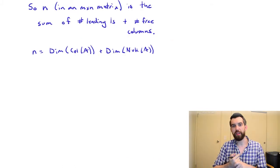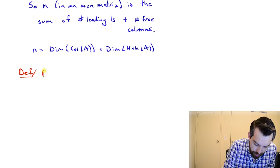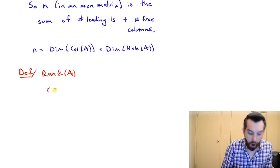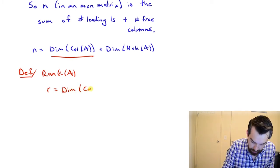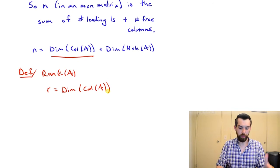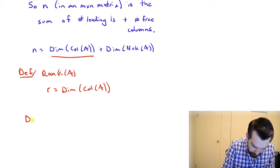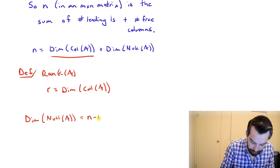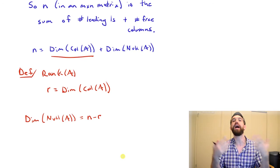This property is important enough that we're going to give it a new name. I am going to define something referred to as the rank of a matrix A. Typically this is just given the symbol R. It is the dimension of the column space of A. Or another way to think about it, the rank is the number of leading ones. We can look at how n breaks up as the sum of two things to get a nice formula for the dimension of the null space. This is just n minus R. The n minus R, which is the dimension of the null space, plus the R adds up to the value of n.